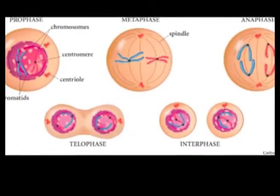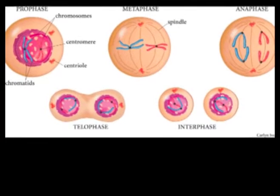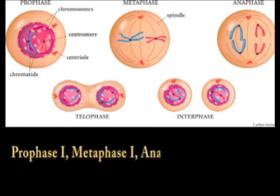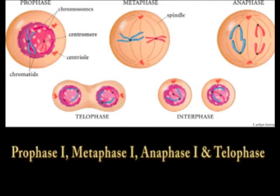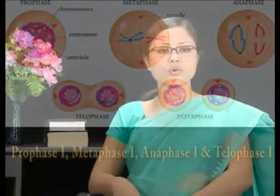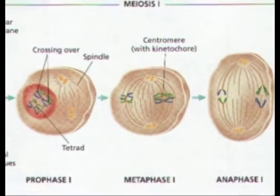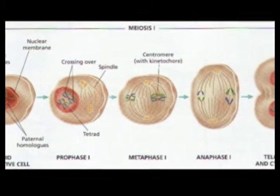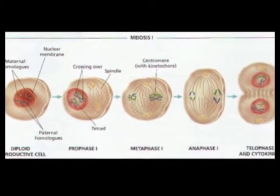Meiosis 1 can be broken down into four sub-stages: prophase 1, metaphase 1, anaphase 1, and telophase 1. Meiosis 1 separates the pair of homologous chromosomes. A special cell division reduces the cell from diploid to haploid.